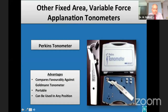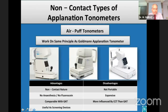The Perkins tonometer uses the same principle as GAT but is portable and can be used in any position. The commonly used non-contact tonometer is an applanation tonometer which uses a column of air to flatten the non-anesthetized cornea. The advantages of the NCT include its non-contact nature and it does not require topical anesthesia or installation of fluorescein dye.